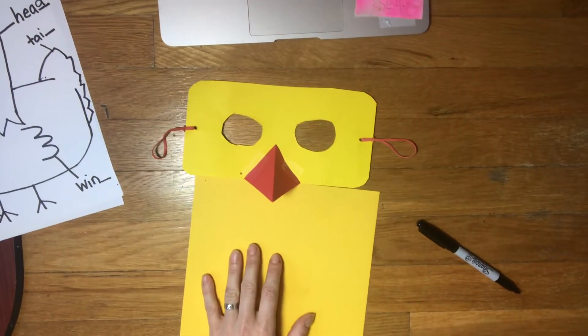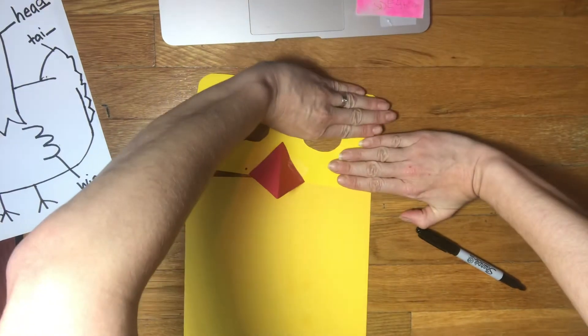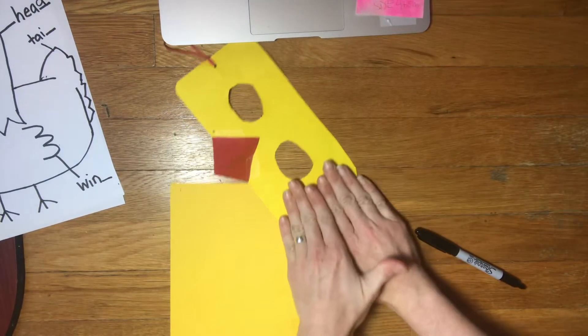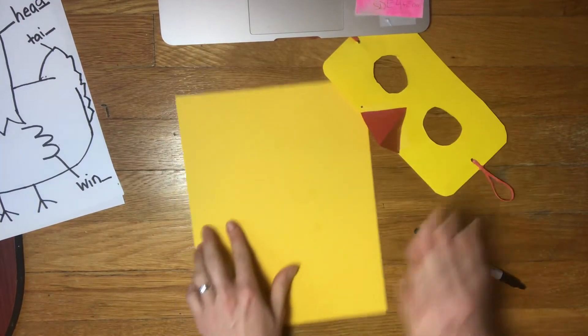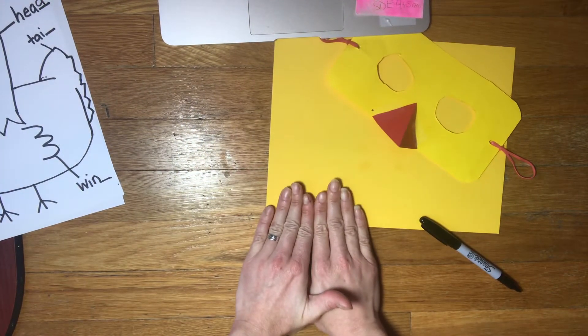To make this chicken mask, I cut about maybe eight fingers of paper from this end. So about that much.